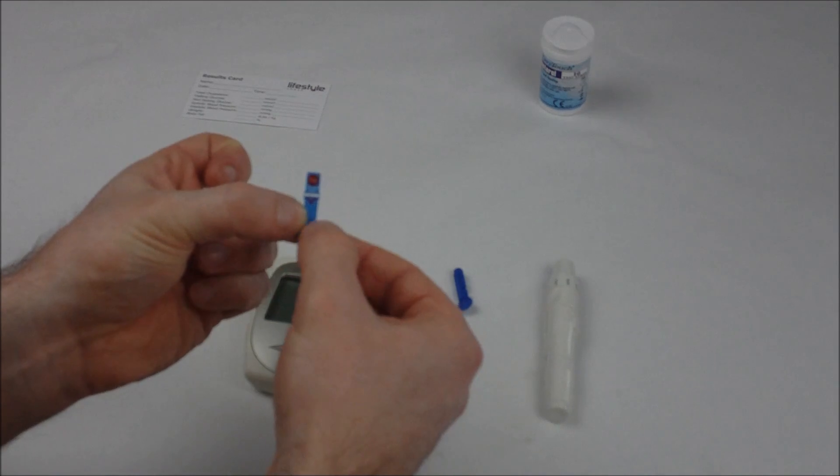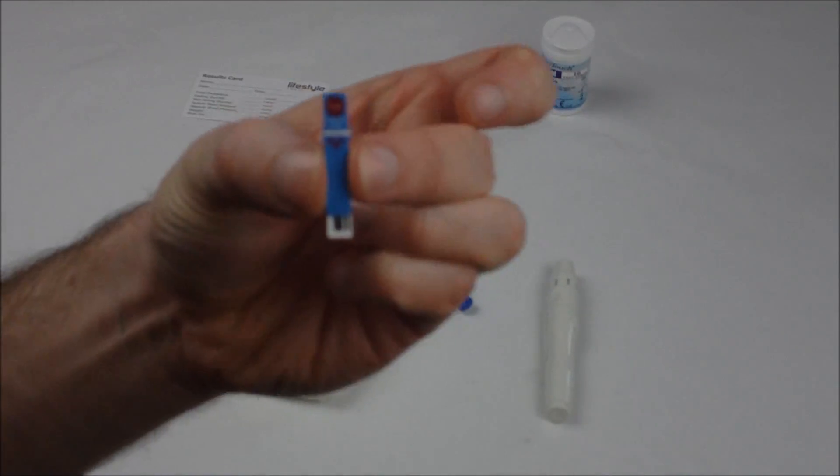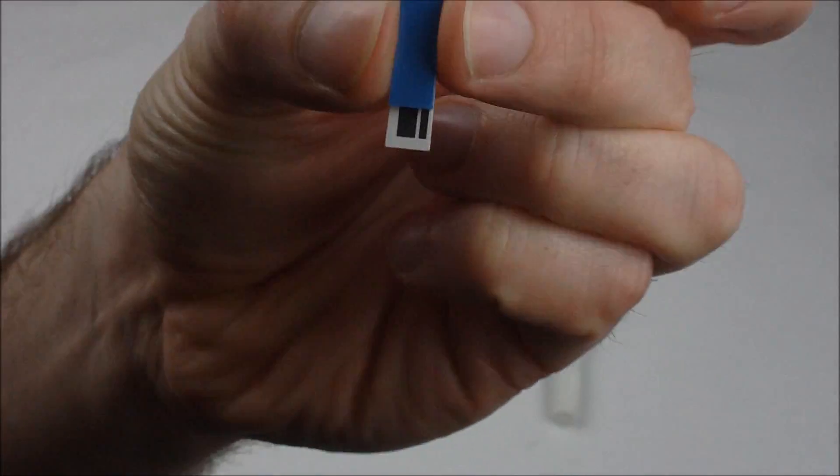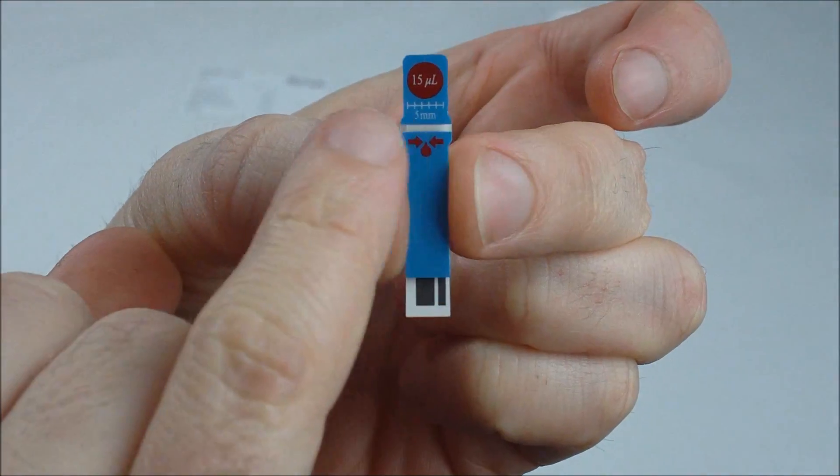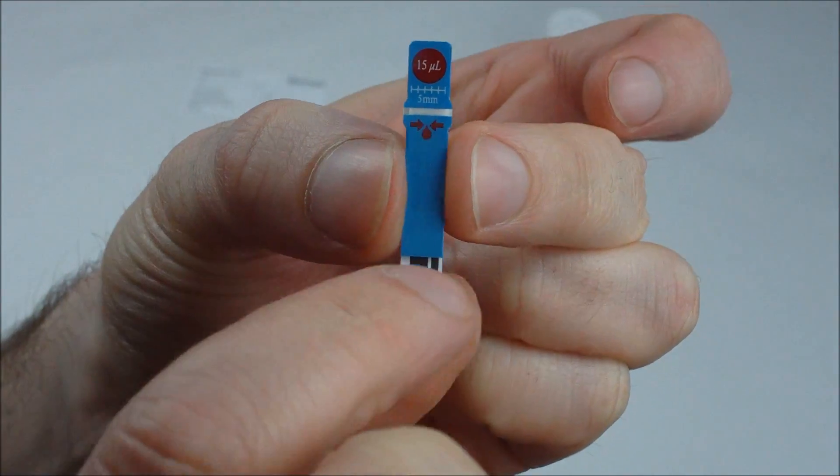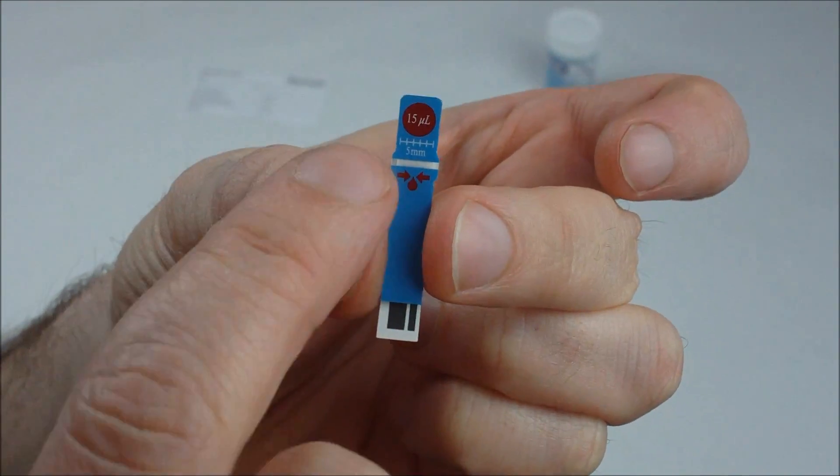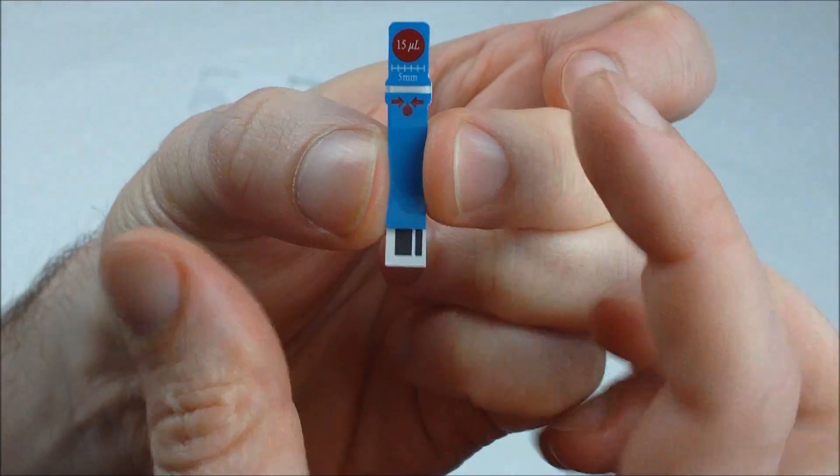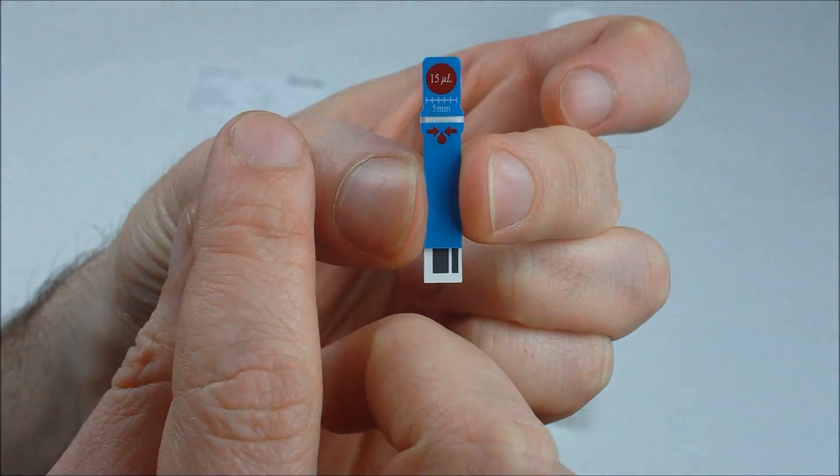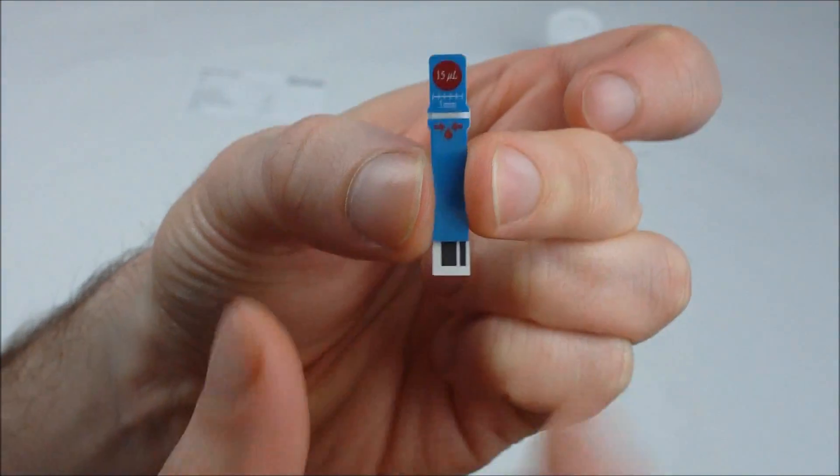Taking a look at the test strip for cholesterol, you'll see that it has a barcode area at the bottom and a test strip area along the middle, and you'll see two arrows from either side. So it doesn't matter with the cholesterol test strip which side you allow your blood sample to soak through.